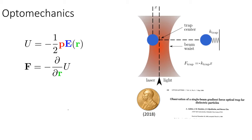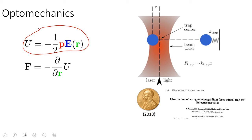I'll start from optomechanics. I believe many in my audience are familiar with these things. Very briefly: if you have a polarizable particle in a field, you can introduce a certain potential U, which is proportional to the polarization of the particle and the spatially dependent electric field. Of course there are other parts with more complicated structure, but we consider just the simplest case.